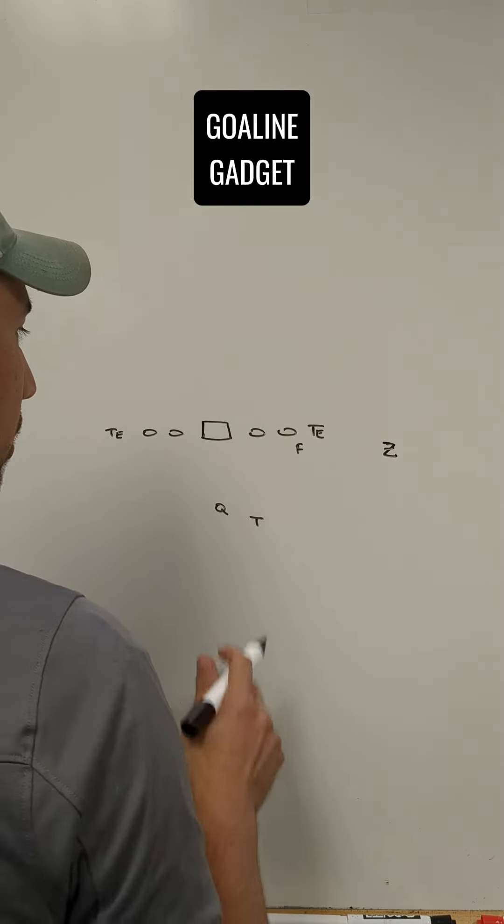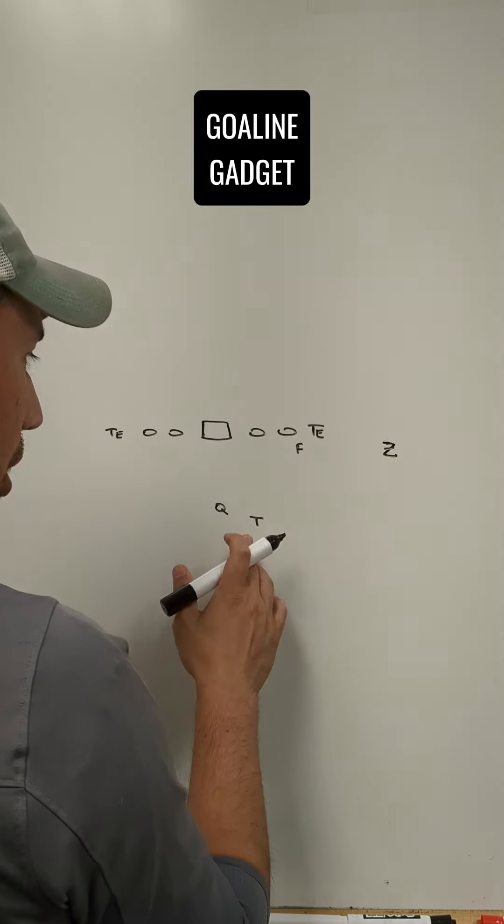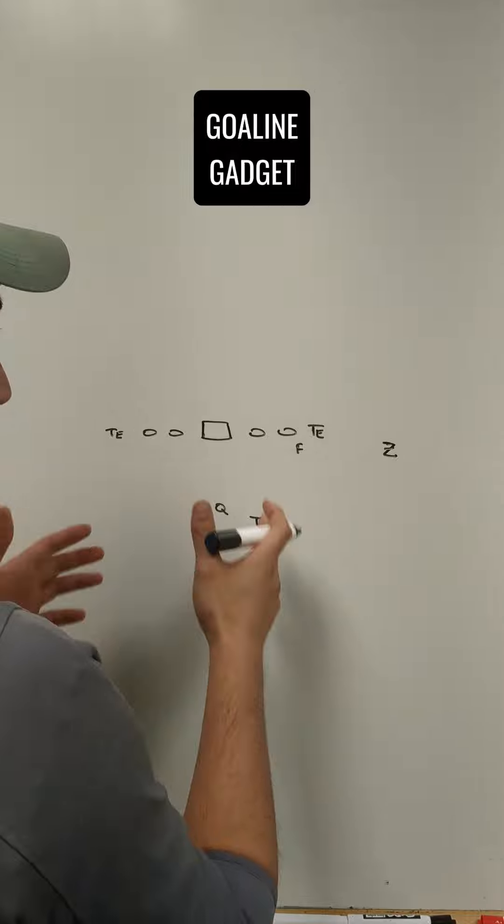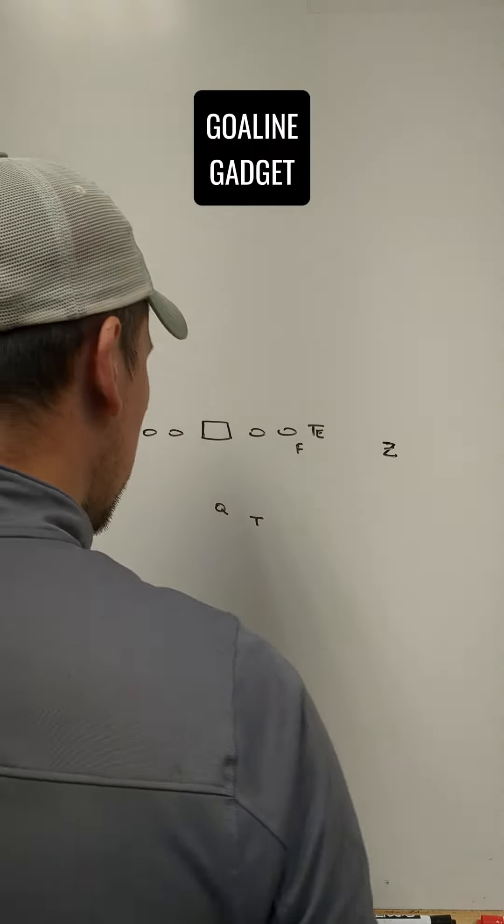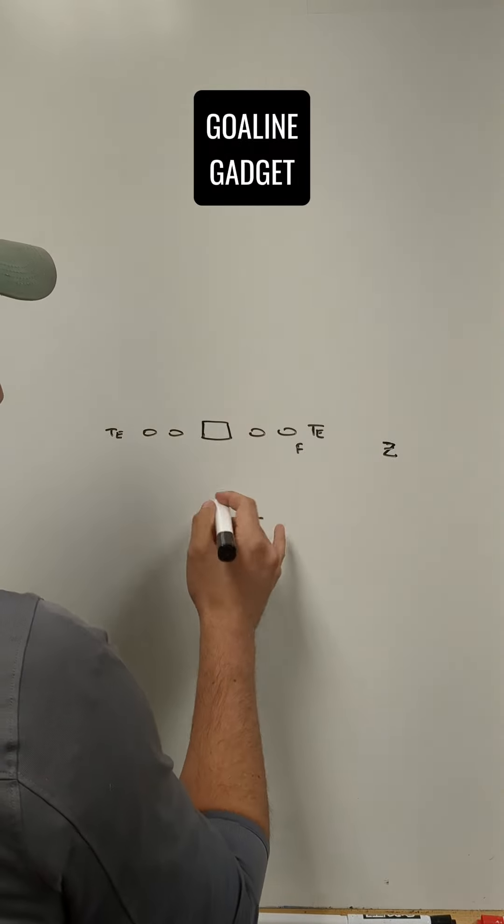We used to get in this heavy set right here. And we used to generally run the ball to the tailback in some sort of power counter, inside zone schemes, whatever. We got lined up like this down on the one.